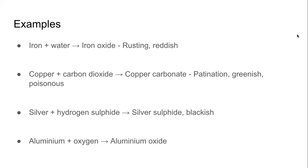Corrosion is not good. Iron becoming iron oxide makes the iron material useless and weak. If copper becomes copper carbonate, the utensil even becomes poisonous. If silver becomes silver sulfide, it becomes dull and wasted. Aluminum becoming aluminum oxide — it may not show, but that is also degrading. Corrosion is not good for the life of the metal. It is like a disease of metals where they are getting old, weak, and dying. But we need metals to last long.